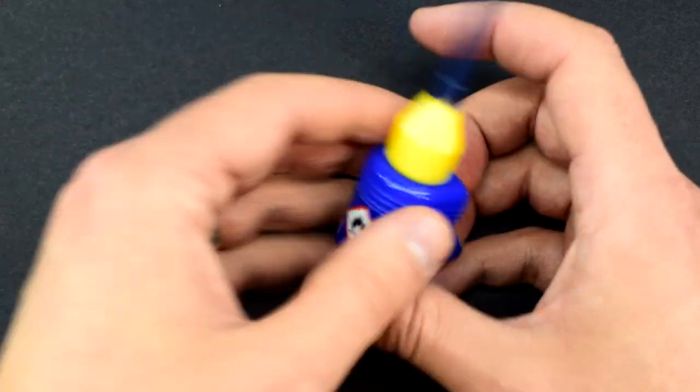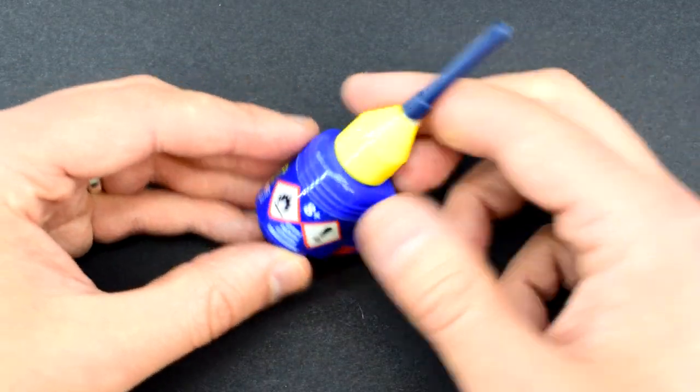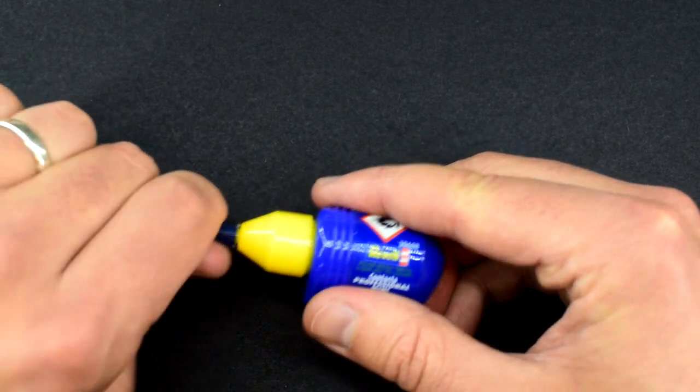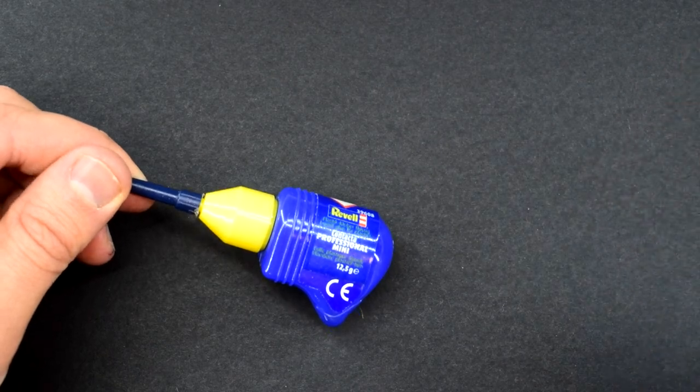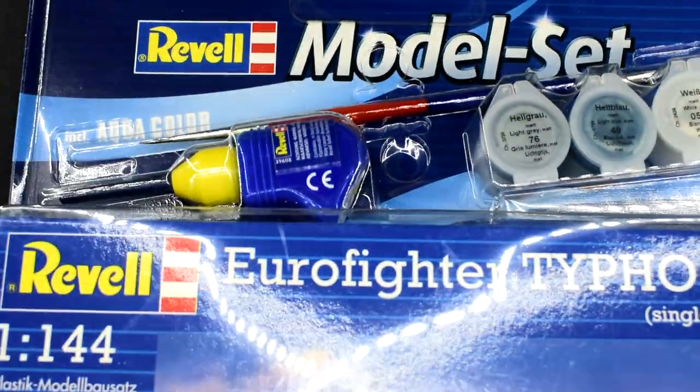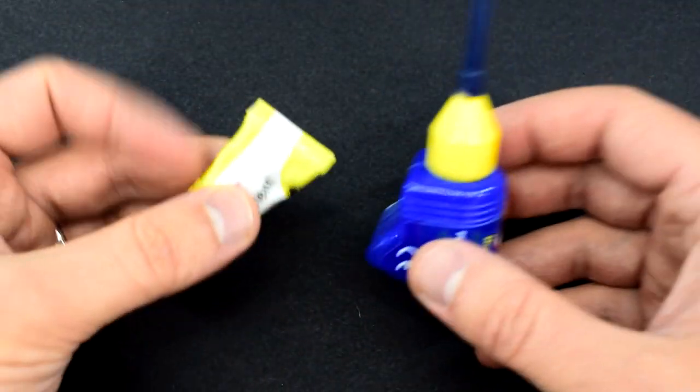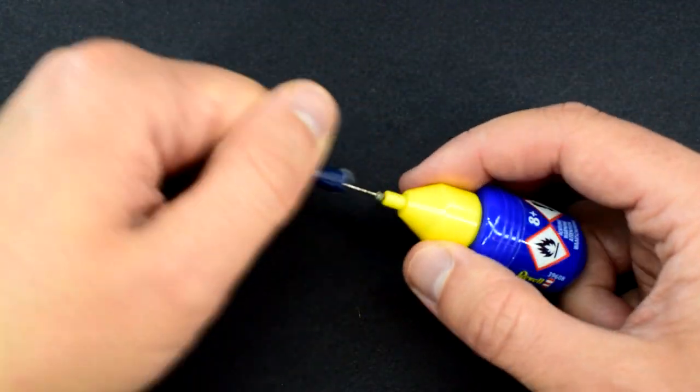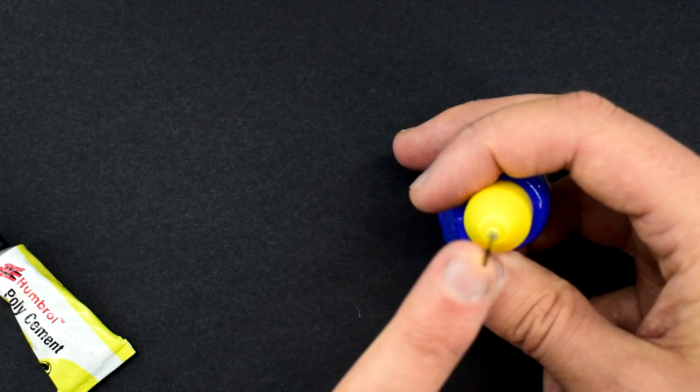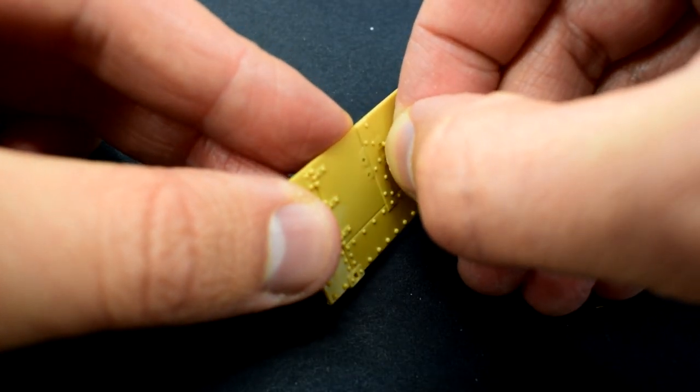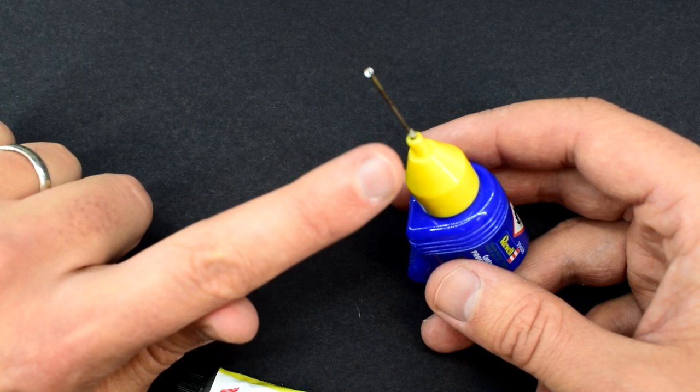But moving on, the next development for me was the Revell Contacta Professional Mini. Now this one, I'm pretty sure I went out and purchased independently. And I really like this because it comes with a needle applicator. But you can get these as part of the Revell starter sets. And I've got one here. And as you can see, there it is, sitting inside the packet. And I quite like that they are included in the Revell starter sets because they're sort of that next evolution in a modeling journey for your cement.